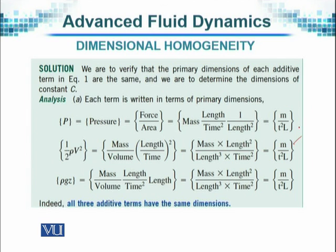The last term in the Bernoulli's equation on the left-hand side is rho GZ, which equals mass over volume, times G — which is length over time squared, the same as acceleration, because G is acceleration due to gravity — times the height Z. Simplifying them, it also reduces to M over T squared times L. So all these terms have the same dimension, as we have seen.